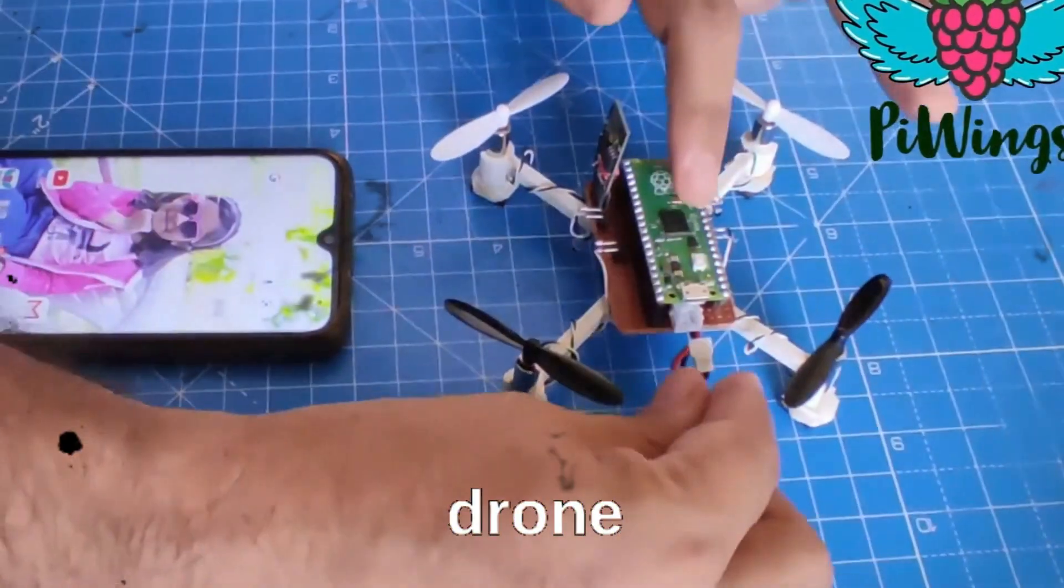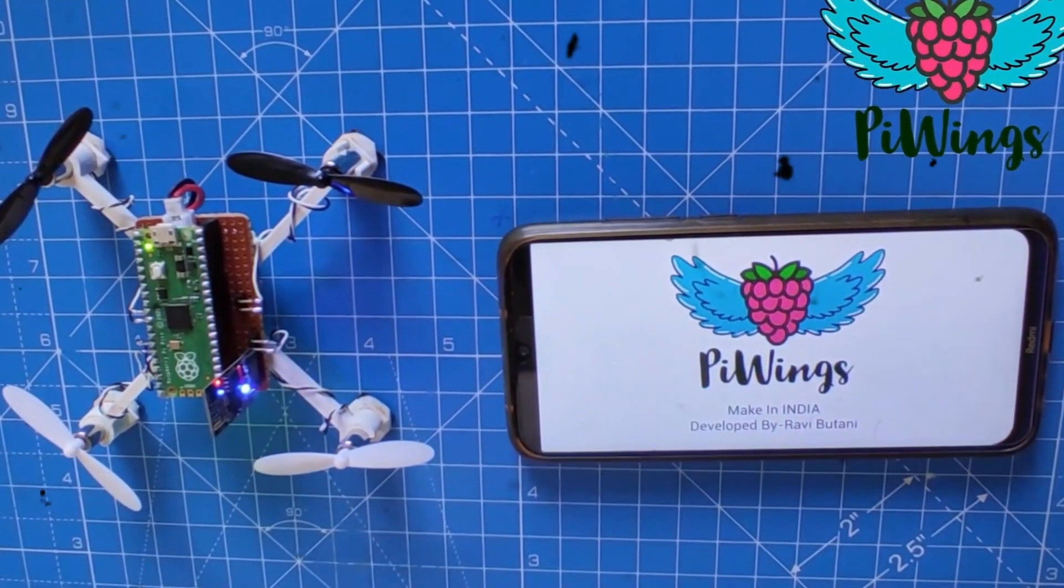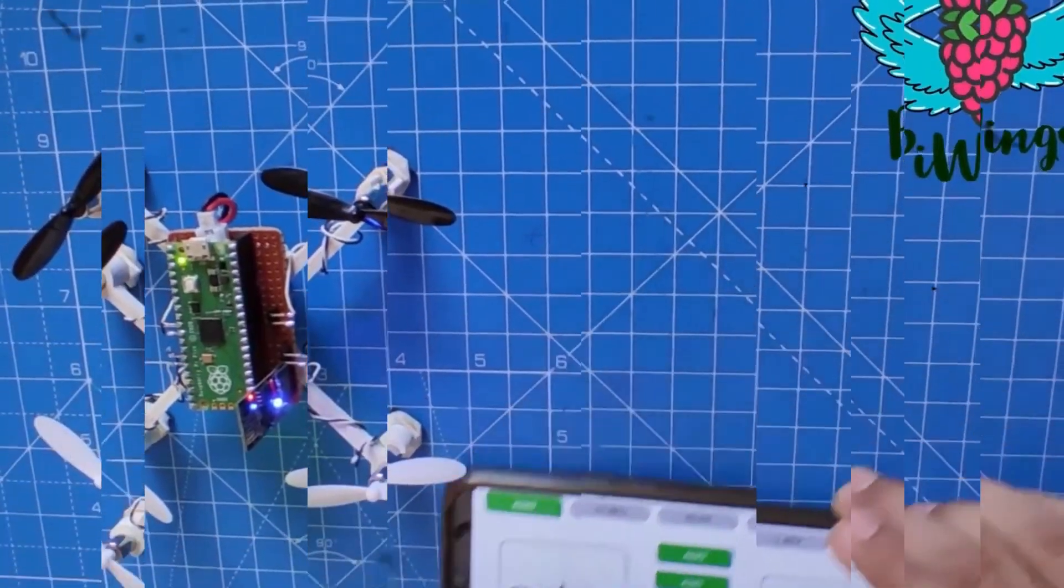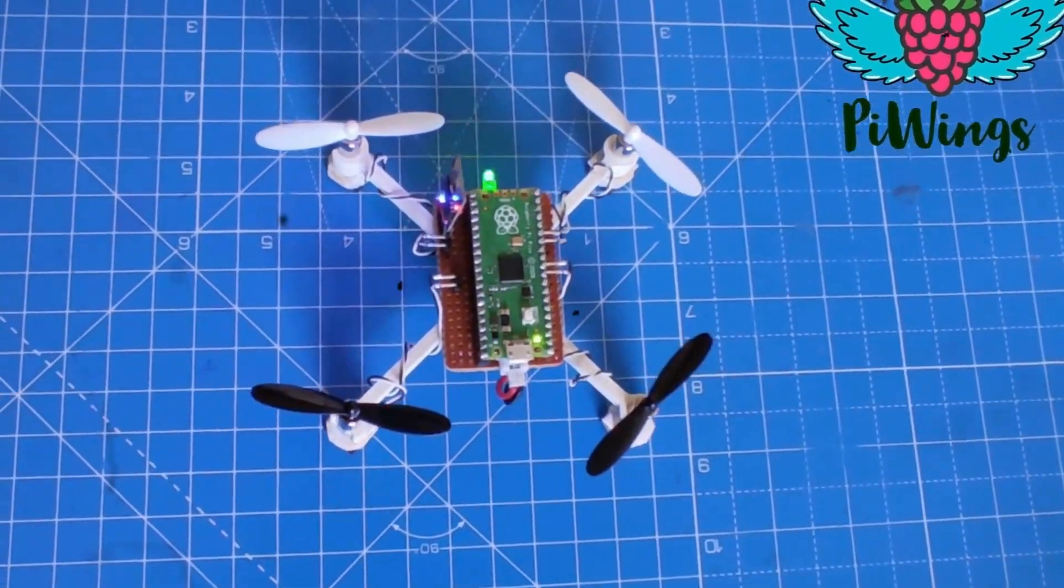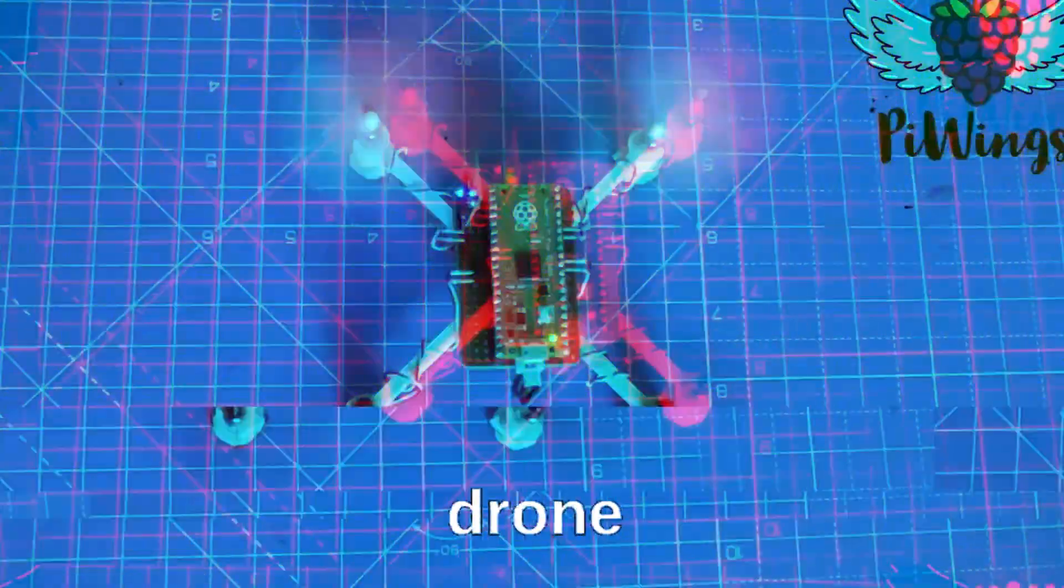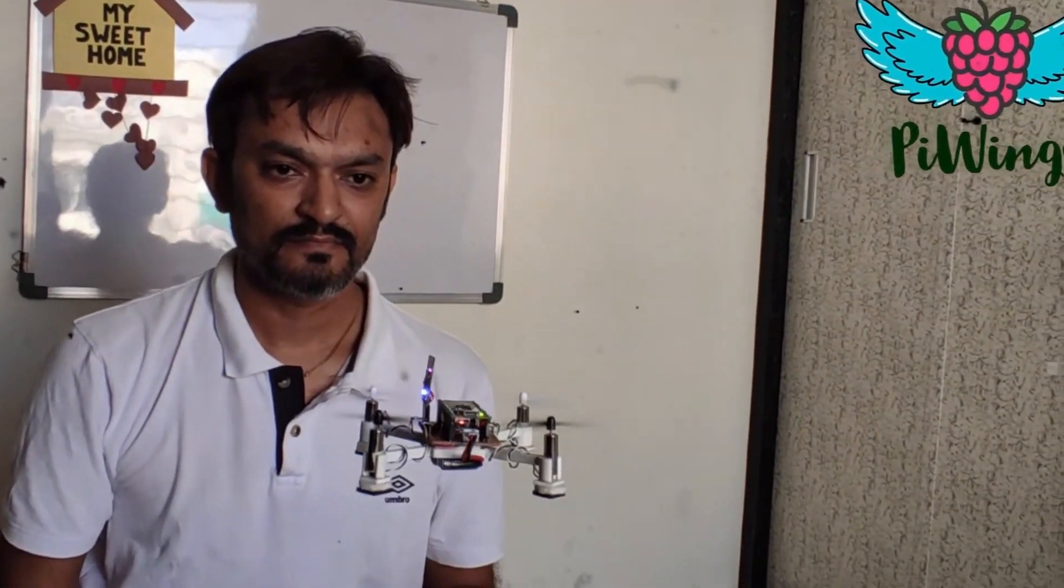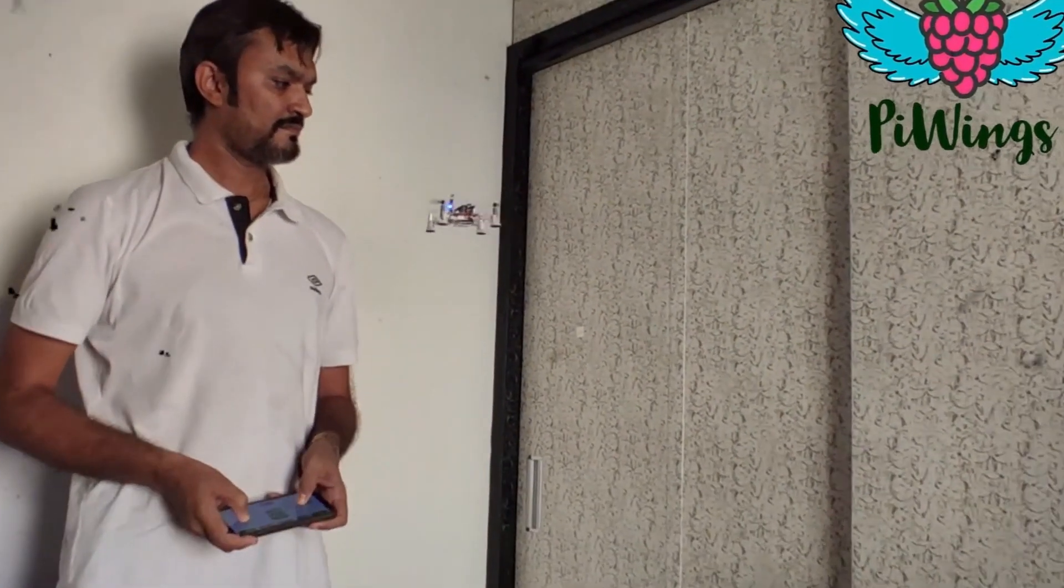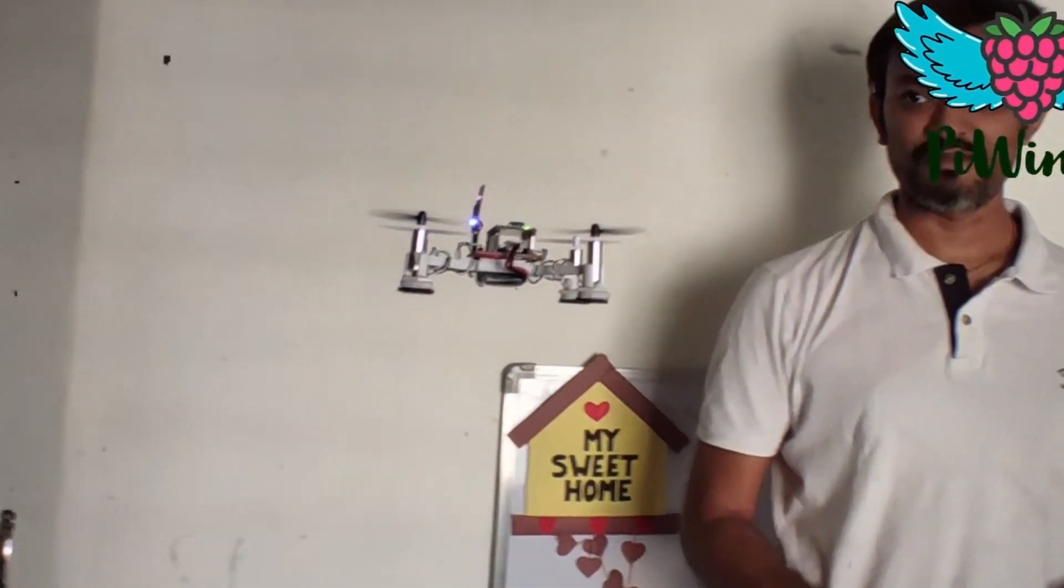Our first project is a homemade drone that is cheap and lightweight. We'll be using a Raspberry Pi Pico and a Bluetooth module to control it. You can connect your phone to the drone through Bluetooth and fly it around wirelessly. This project may seem complicated, but it's actually a lot of fun for beginners.